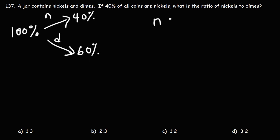So to find a ratio of nickels to dimes, n to d, it's going to be 40% to 60%, which if we get rid of the percentage, it's equivalent to 40 and 60.